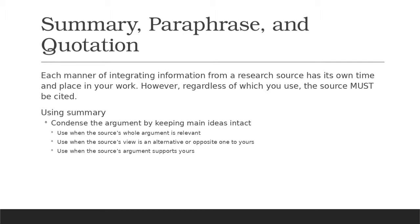Starting with summary: you condense the argument by keeping the main ideas intact. Use it when the source's whole argument is relevant and you have to look at the entire thing holistically. Use it when the source's view is an alternative or opposite one to yours, or if it's an opposing viewpoint. Also use it when the source's argument directly supports yours — you can summarize to show that these sources are in agreement with you.